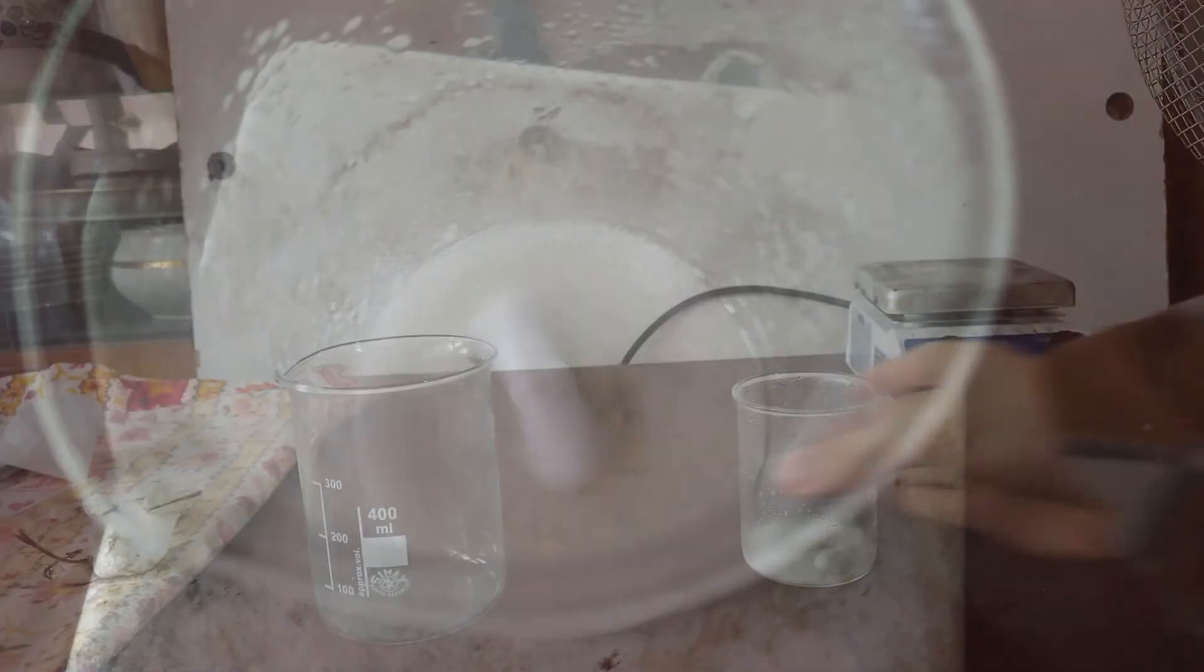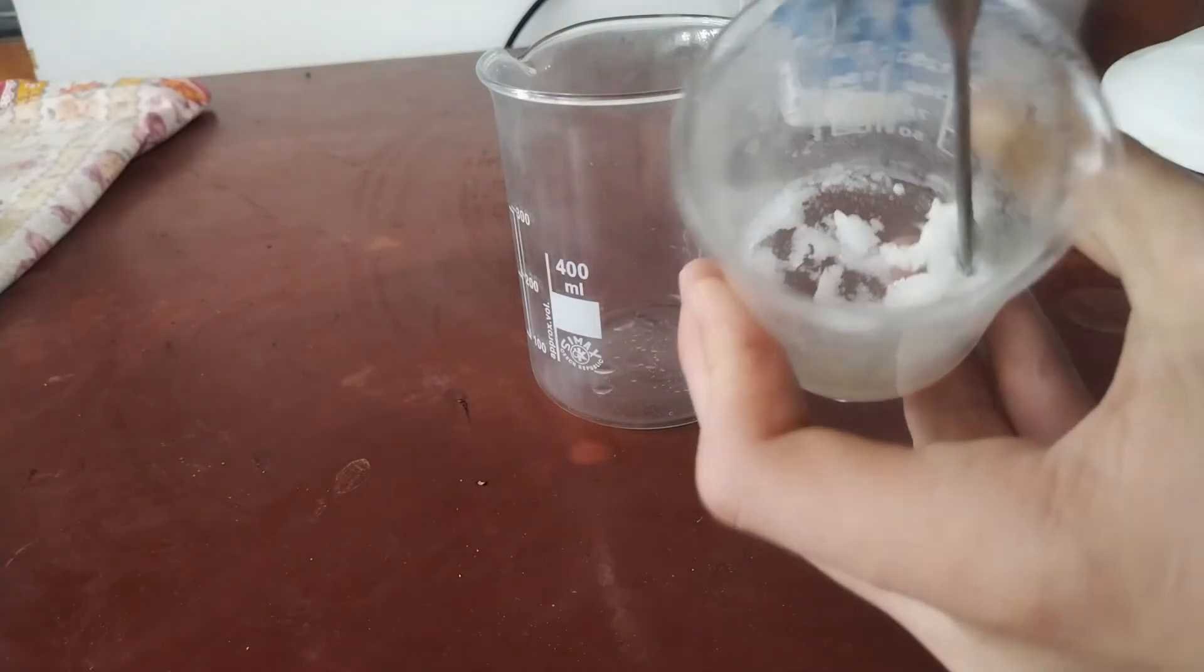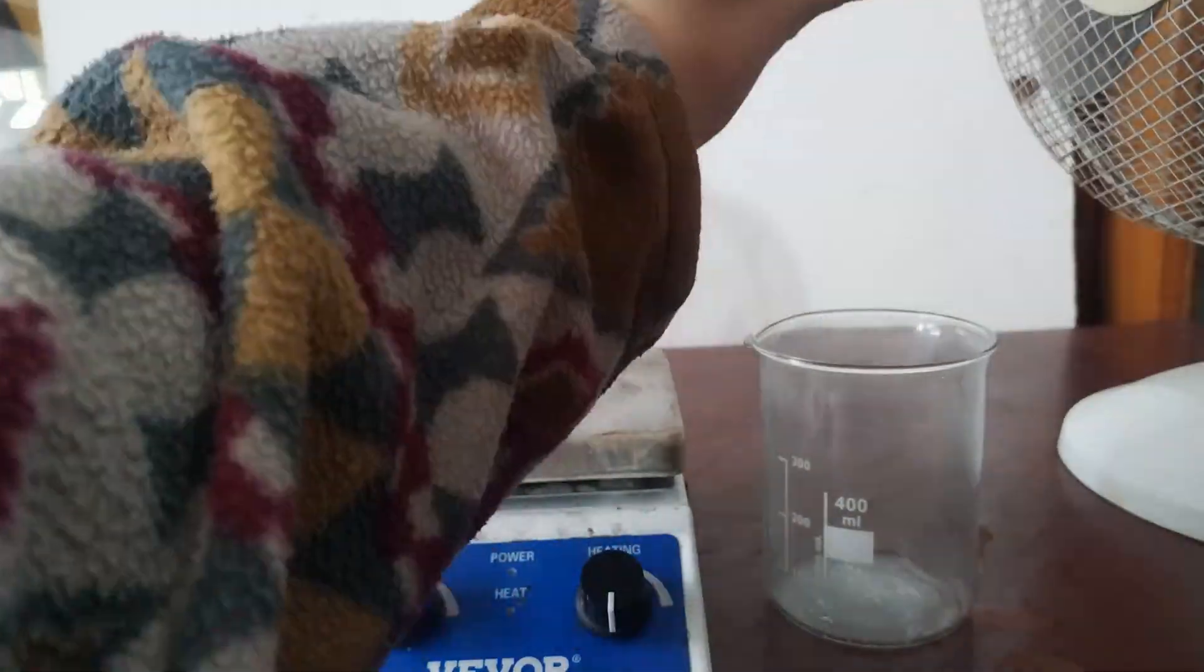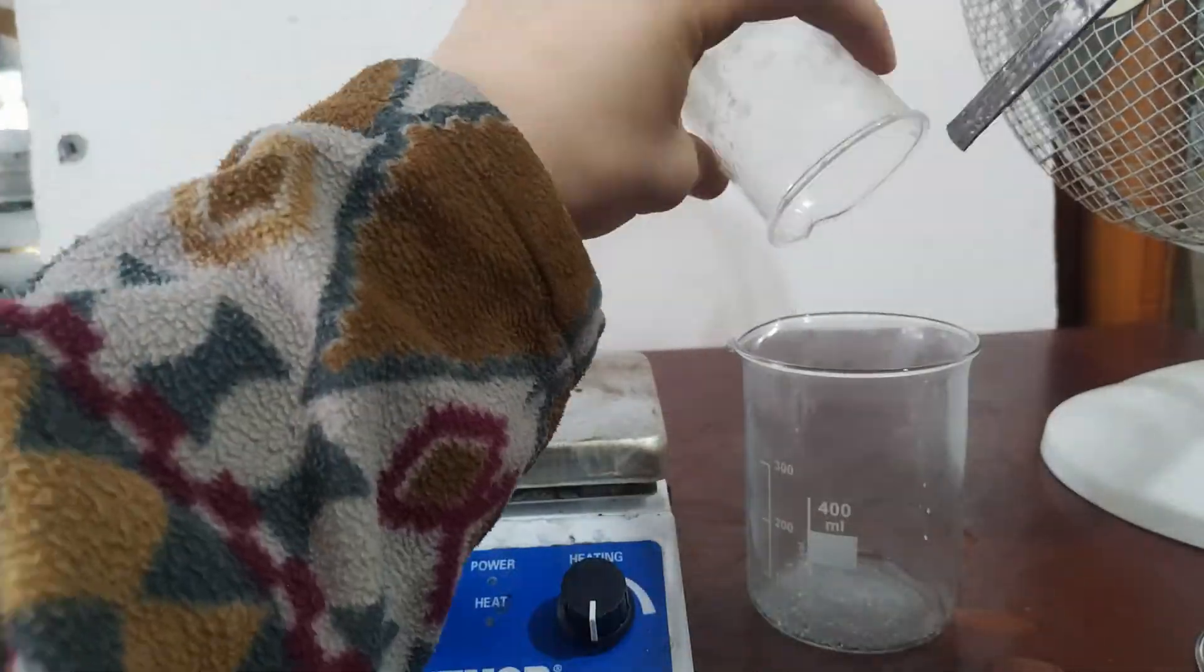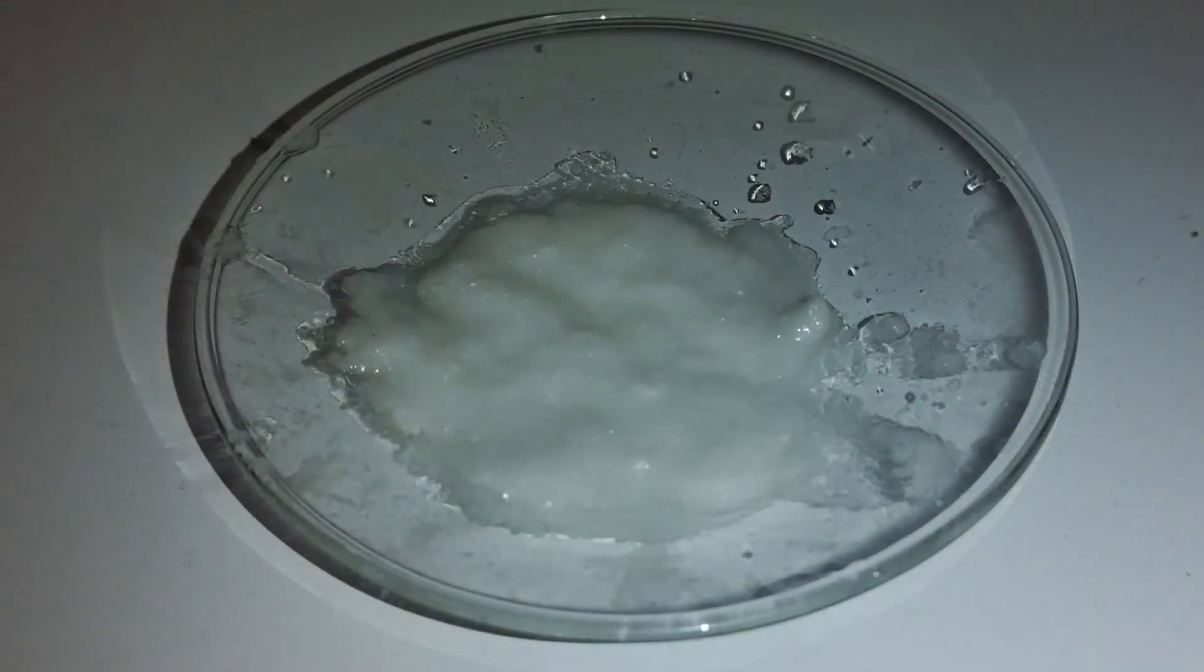Once the mixture has crystallized, you can take it out and put it into a freezer overnight. Now we will pour out any excess liquid which hasn't crystallized. Now take out the product and put it to dry on something.